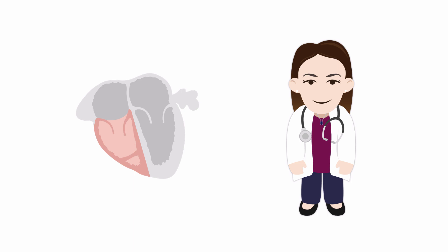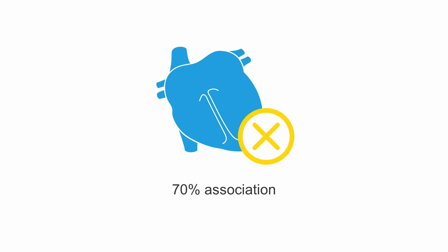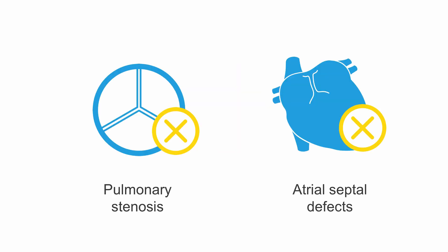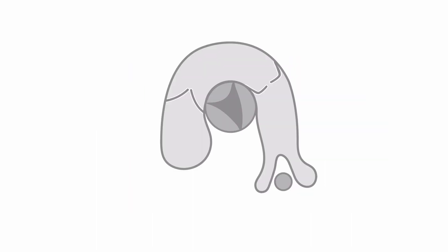In the right ventricle, anomalous muscle bundles or an abnormally positioned moderator band can cause differential pressure leading to what we term a double-chambered right ventricle. Double-chambered right ventricles are associated with ventricular septal defects 70% of the time, but can also be associated with pulmonary stenosis and atrial septal defects. I'll use the short axis view to discuss this concept because we can see both inflow and outflow portions of the right ventricle.